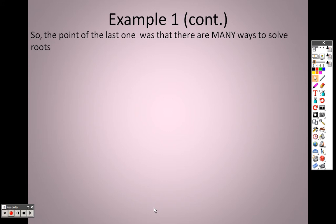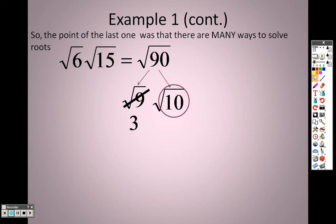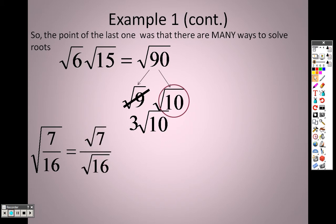There are many ways to solve roots. If I'm looking at the square root of 90, I would choose root 9 and root 10 because the square root of 9 simplifies once and for all — the square root of 9 is 3, so it's 3 root 10. If I had the square root of 7 over the square root of 16, I could rewrite that as root 7 over root 16, and root 16 simplifies to 4. The key here is you can never have a root in a denominator — so it's root 7 over 4.